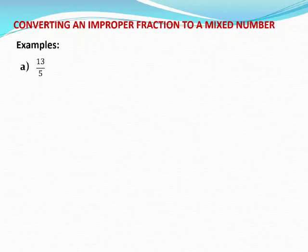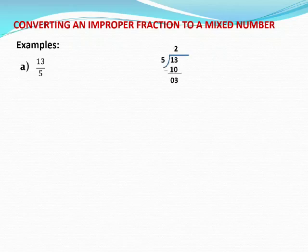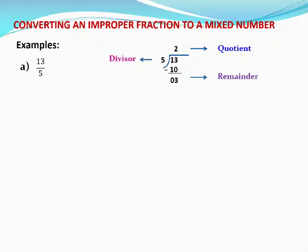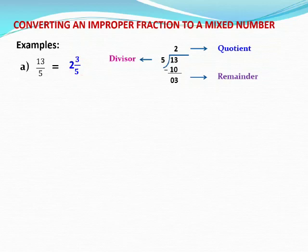First example: 13 by 5 is an improper fraction. We are going to convert this into a mixed number. First step is to divide 13 by 5 and get the quotient and the remainder. What is the quotient here? It is 2 and the remainder is 3. The divisor is 5. So what is the form of writing a mixed number? We write the whole number part as the quotient, remainder as the numerator, and divisor as the denominator.